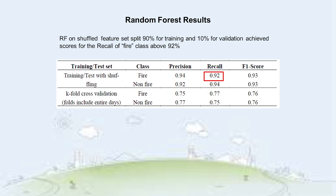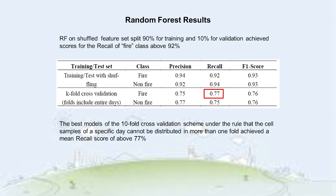In order to increase the difficulty by simulating unknown conditions for the validation set, a 10-fold cross-validation scheme was implemented under the rule that the cells of a specific day cannot be distributed in more than one fold. The best model selected from hyperparameterization in this harder setting achieved a recall score for the fire class above 77%.